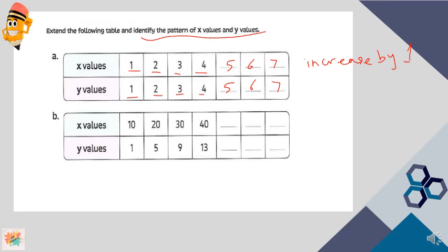Next one, if I have x values 10, 20, 30, 40, then the next will be 50, then 60, then 70. This means that x values increase by ten.